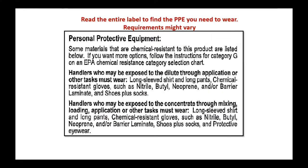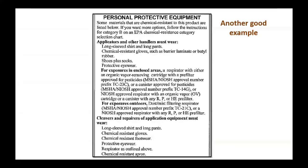You must read the entire label to make sure you're using the right PPE at the right time, as there might be variation. For example, a label may require handlers to wear protective eyewear when working with the pesticide in its concentrated form, but not once the pesticide is diluted. Unfortunately, the order of paragraphs can be odd, and handlers could easily overlook the fact that they need to wear protective eyewear when mixing or loading.